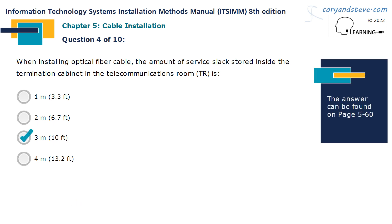When installing optical fiber cable, the amount of service slack stored inside the termination cabinet in the telecommunications room, or TR, is 3 meters, or 10 feet.